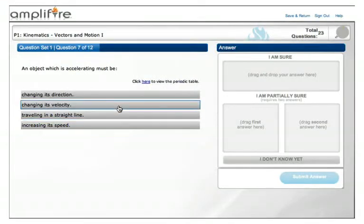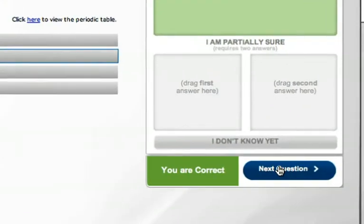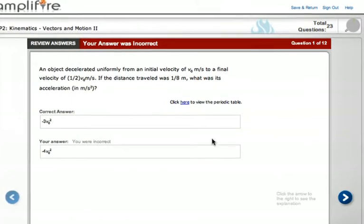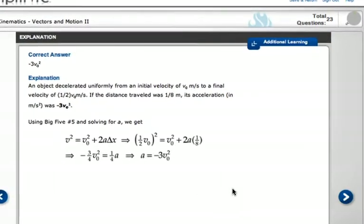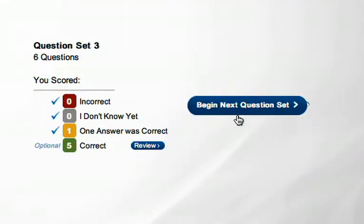Additionally, cognitive psychology research shows that chunking questions and their explanations together in this way helps your brain better absorb the information. Once you review the learning for the first set of questions, Amplifier presents you with a new set of questions.